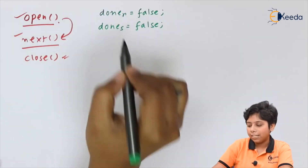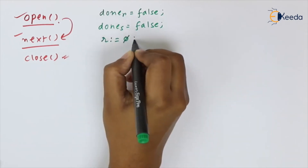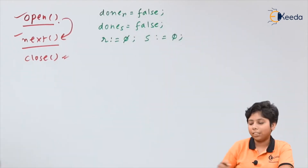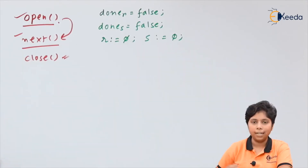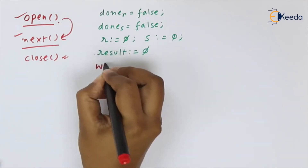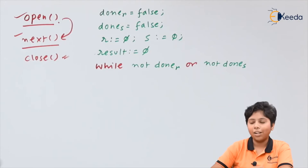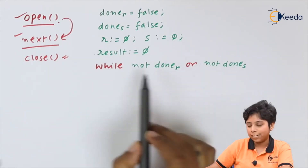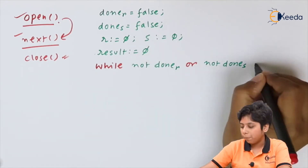First, for both relations r and s, we set done_r and done_s to false because nothing has been done yet. Then we set both r and s relation sets to null since they contain nothing initially. We evaluate each expression and store results into r and s. We begin the while loop as long as done_r and done_s are not both true.